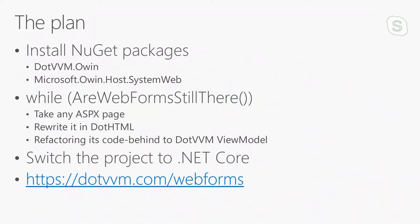The plan for modernization will be quite simple, though it can take a few weeks or months on a real-world project. First, install DotVVM NuGet packages — there are two of them. Then, until you get rid of all Web Forms pages, take an ASPX page, rewrite it in DotVVM syntax for the views (it's similar but not the same), and most importantly, refactor the code-behind files into view models. It's also a C# class, so you can copy-paste some code and change it. You won't manipulate text boxes and controls directly — you'll use data binding instead. As a side effect, you'll get testable view models.